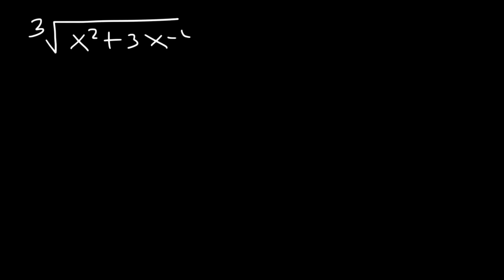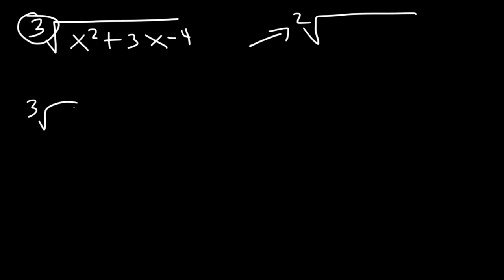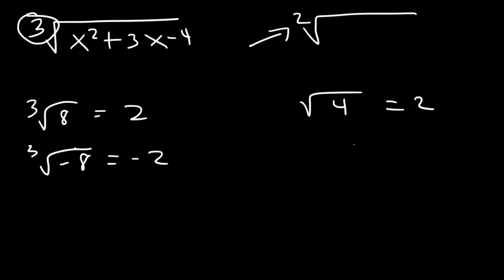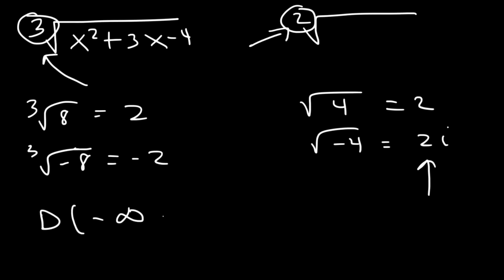Now what about the cube root of x squared plus 3x minus 4? In the other examples, we were using the square root. If the index number is even, the domain will be restricted — you cannot have any negative numbers inside a radical with an even index. But if the index number is odd, you can have negative numbers. For example, the cube root of 8 is 2, and the cube root of negative 8 is negative 2 — nothing wrong with that. The square root of 4 is 2, but the square root of negative 4 is not a real number — it's an imaginary number, and imaginary numbers are not visible on a graph. So if you have an odd index, you don't have to do anything — the domain is all real numbers.